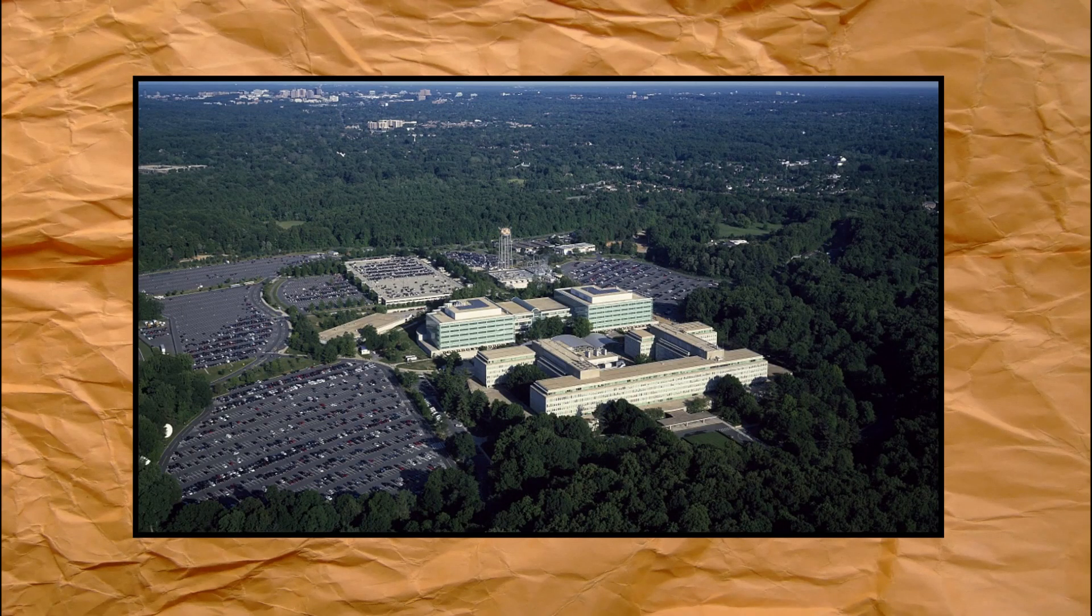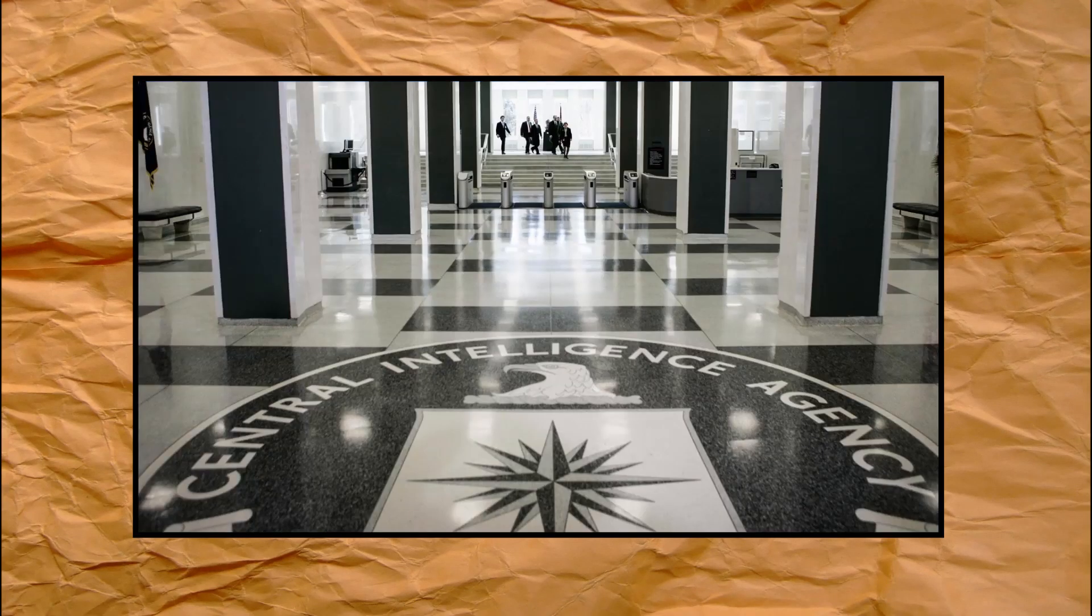This is the CIA headquarters in Langley, Virginia. Inside this building there are filing cabinets full of secrets hidden from the public eye.